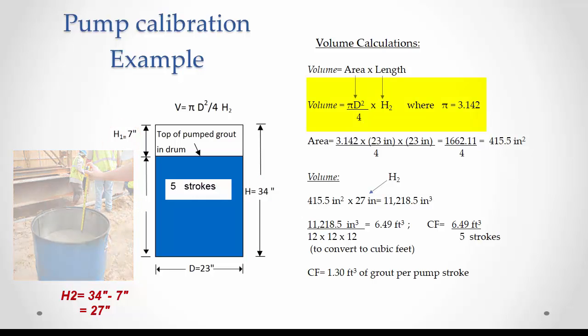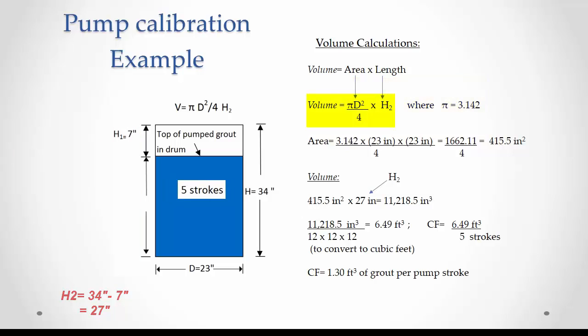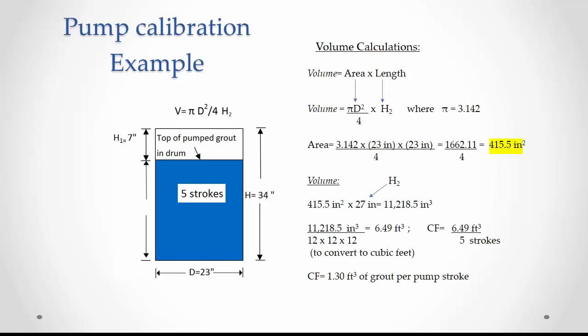With these dimensions, he can compute the volume that was grouted. Volume equals the area of the circle times H sub 2. The area of the circle is 3.142 times 23 squared divided by 4, which is equal to 415.5 square inches.